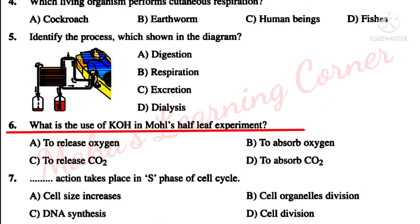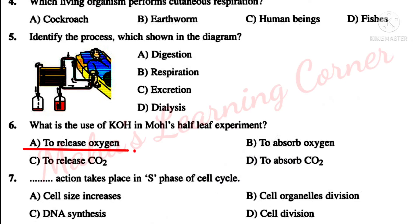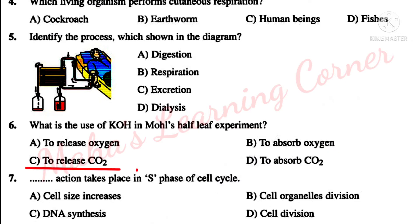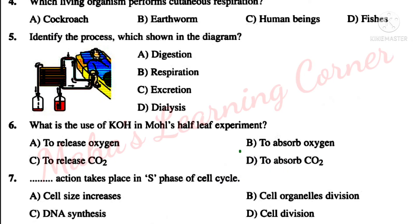What is the use of KOH in the half leaf experiment? KOH, or potassium hydroxide, is used in the half leaf experiment. Options — A: To release oxygen. B: To absorb oxygen. C: To release CO2. D: To absorb CO2. Correct answer: Option D — To absorb CO2.